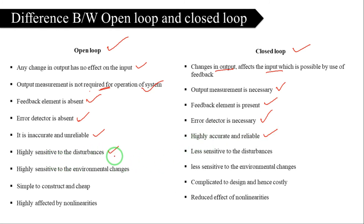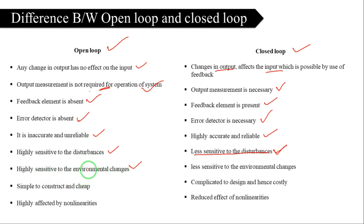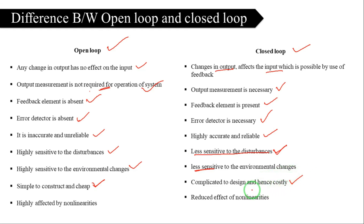Open-loop systems are highly sensitive to disturbances — the output is affected by environmental changes. In closed-loop systems, there is less sensitivity to disturbances and environmental changes because of feedback control. Open-loop systems are simple to construct and cheap since there is no feedback connection. Closed-loop systems are complicated to design. Finally, open-loop systems are highly affected by non-linearities, while closed-loop systems reduce the effect of non-linearities.